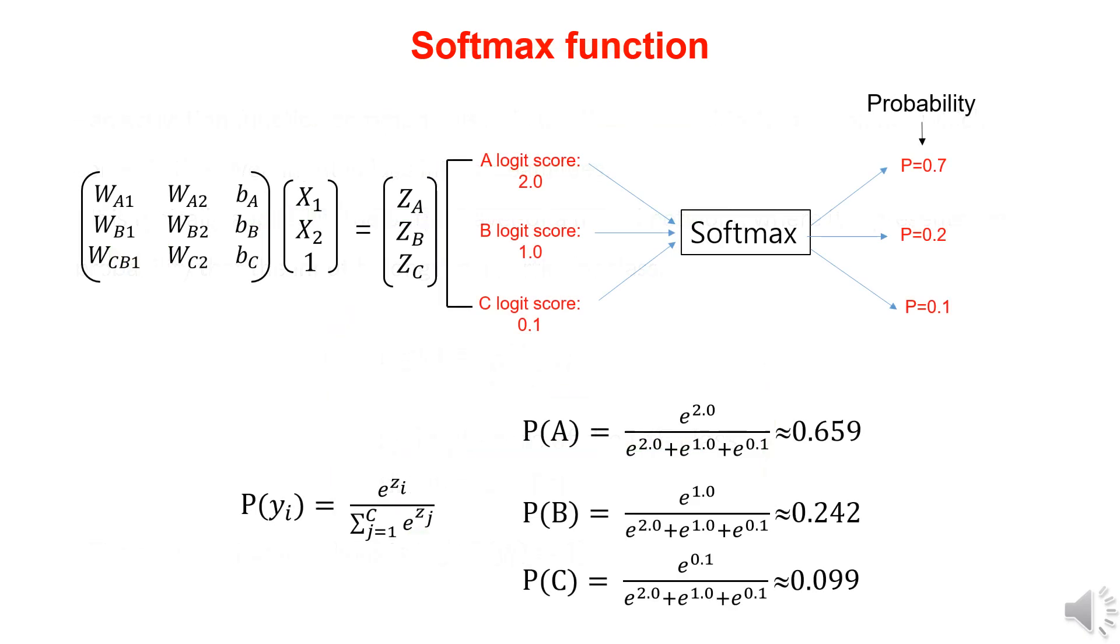Now, let's look at an example to see how the softmax function is used. In a multi-class classification problem with three classes, A, B, and C, let's assume that the neural network outputs logit scores of 2.0, 1.0, and 0.1 for A, B, and C, respectively. Using the softmax function, we convert these logit scores into exponential values, and then divide by the total sum to calculate the probabilities.